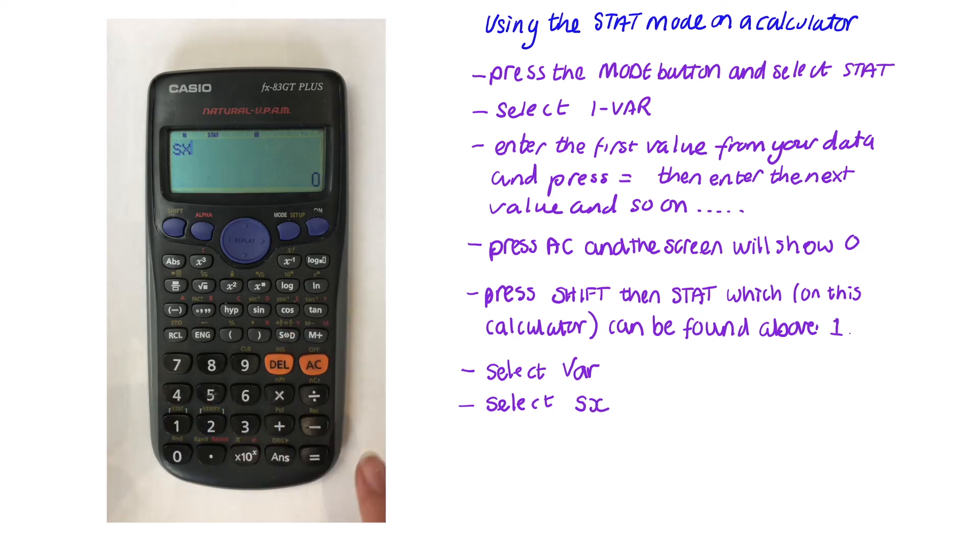You must press SX as this is a standard deviation in a sample of data and is worked out using n minus 1. The other standard deviation is for a whole population of data so that would just be using n in the formula. So once you've pressed SX then press equals and you have your standard deviation which is 0.9486832981. The same number as you did the other way or you can round it up 0.95.